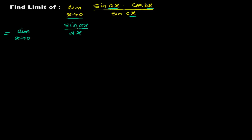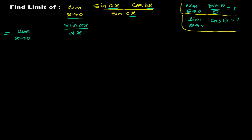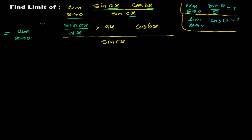In my standard formula, the limit when theta tends to zero of sine theta over theta equals one — when angle tends to zero, sine angle over angle equals one. For cosine, when theta tends to zero, cosine theta equals one. To use these formulas appropriately, I'm dividing by ax, so I must also multiply by ax. Then I write cos bx, and the whole expression divided by sine cx.